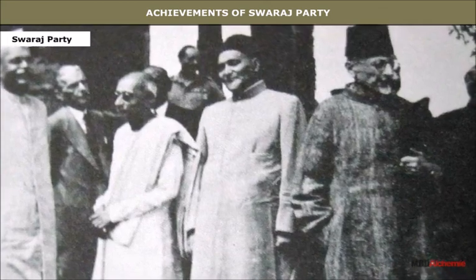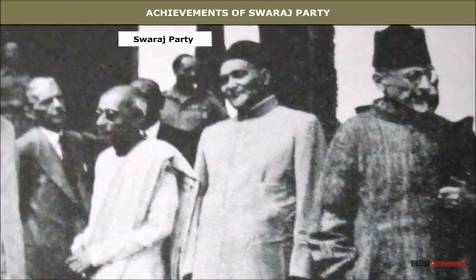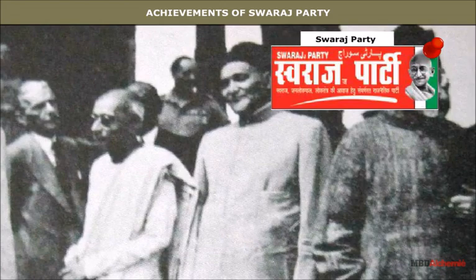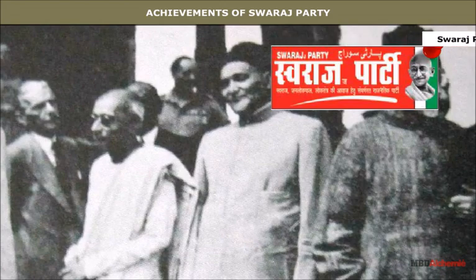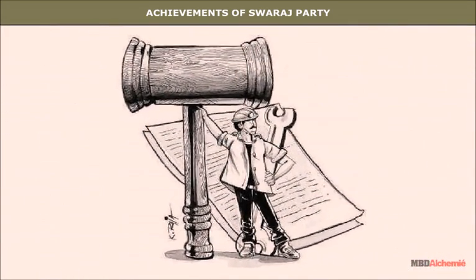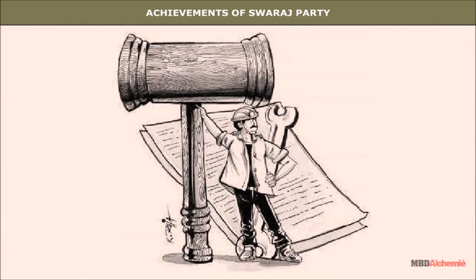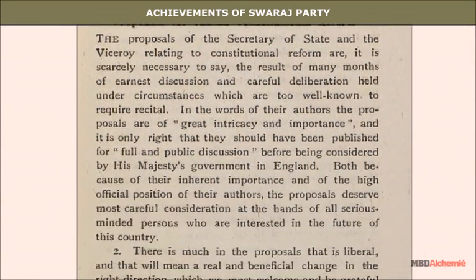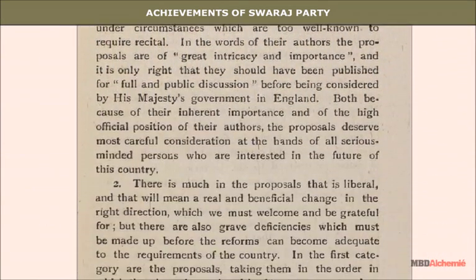Achievements of the Swaraj Party: Some of the major achievements of the Swaraj Party were that it awakened the political consciousness of the people of India. It fought for the improvement of the conditions of laborers and forced the government to reduce railway fares and military expenses of the British Indian government. They also exposed the hollowness of the Government of India Act 1919.